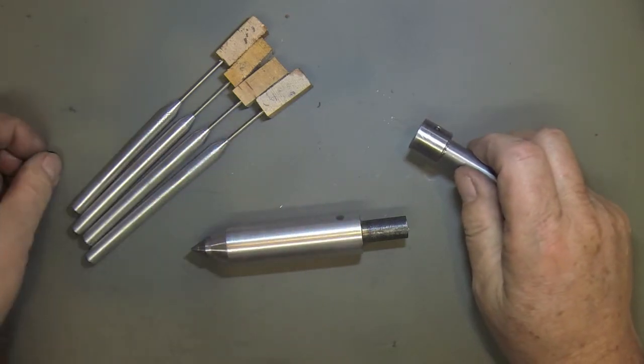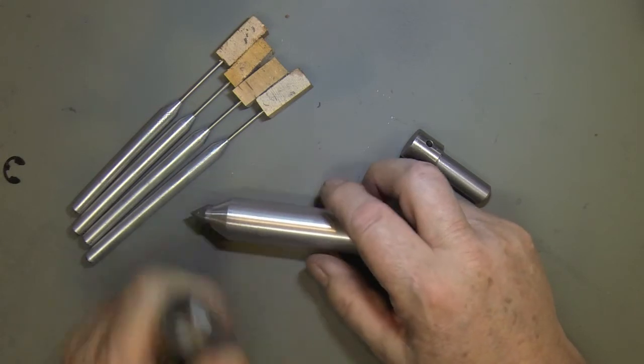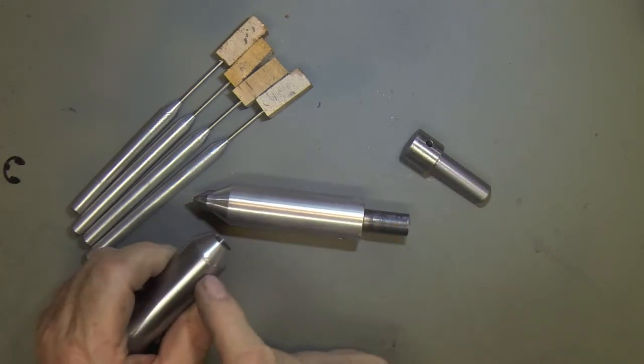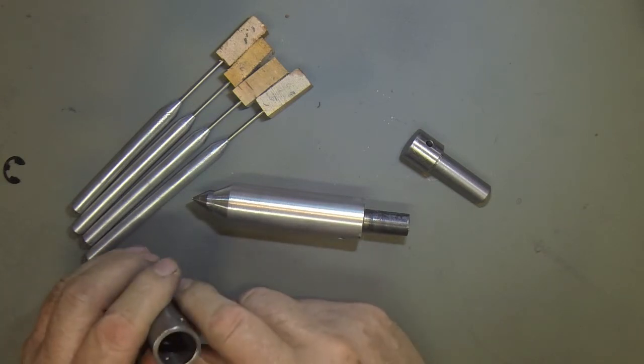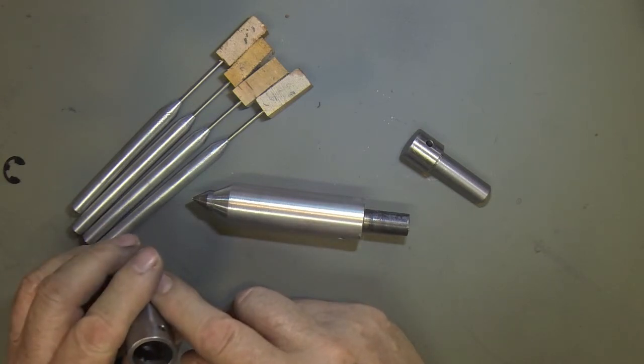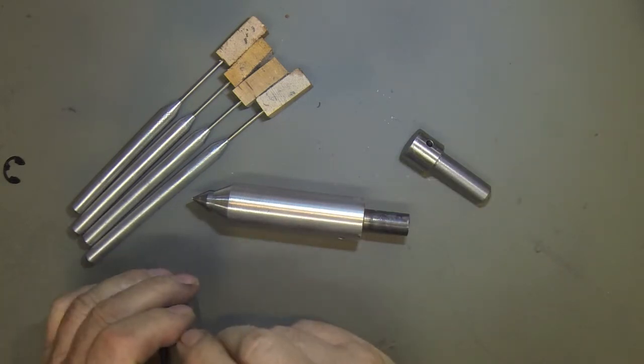Then the spring goes up against that. It's bored a half inch down to about here and the rest of it is like three quarters of an inch. Took a three quarter inch end mill, put a flat bottom on it.